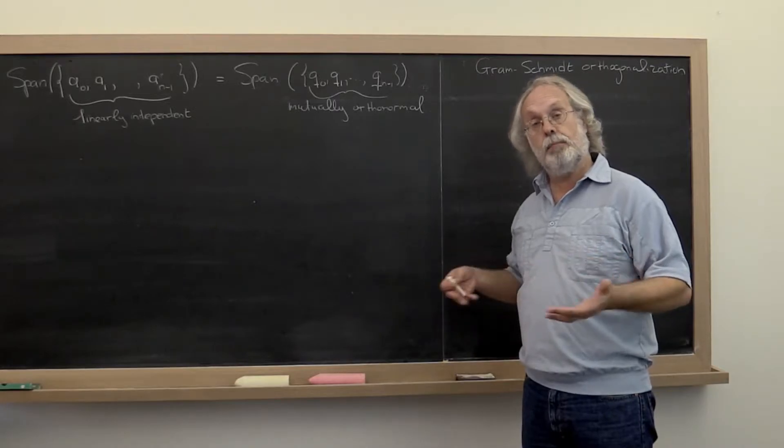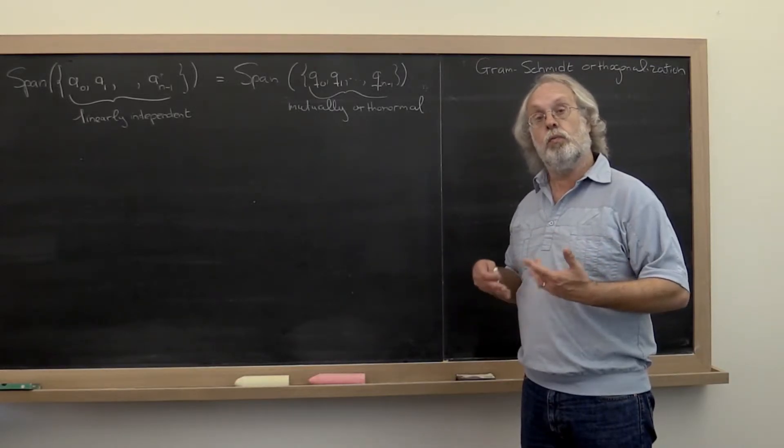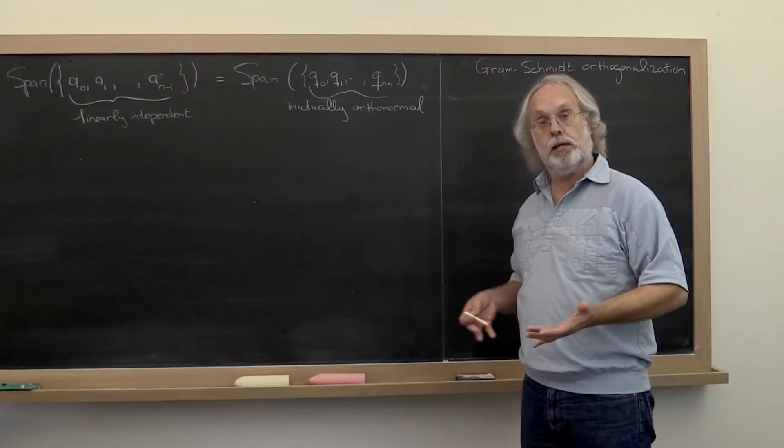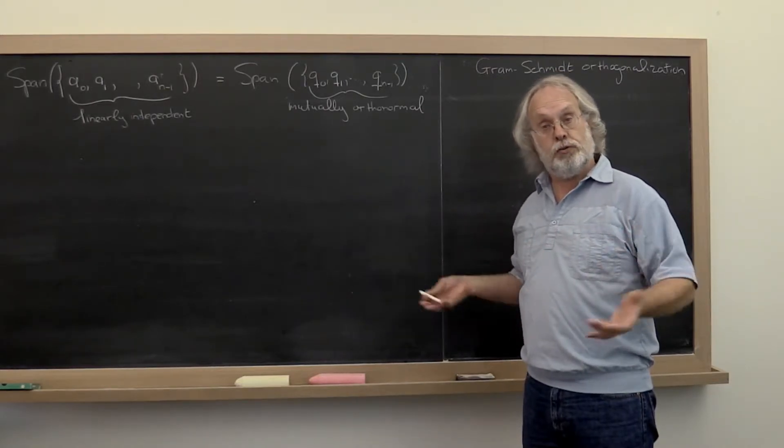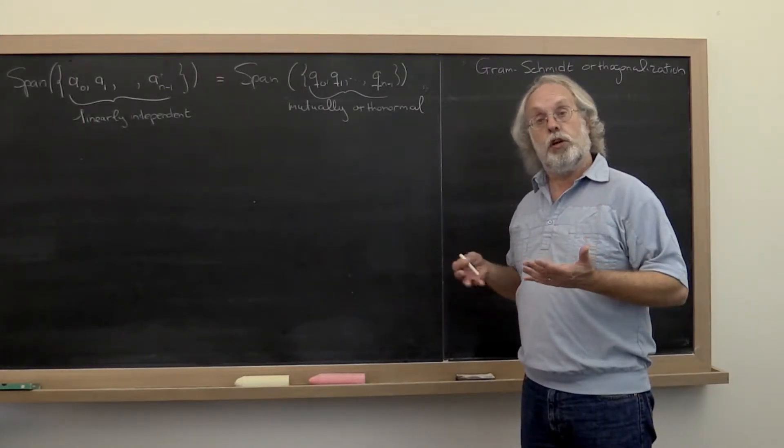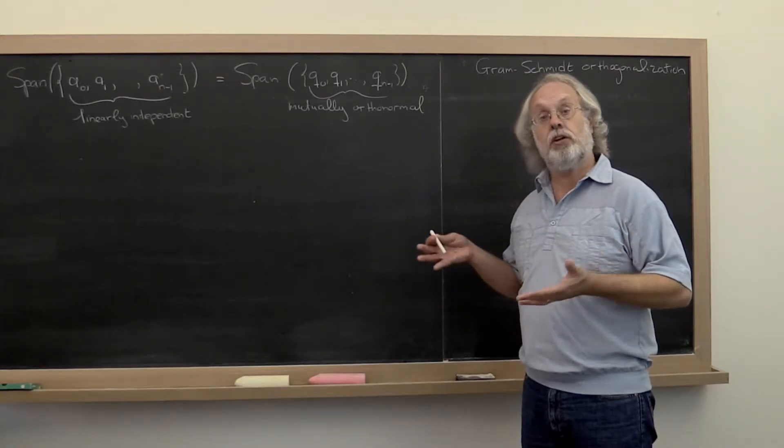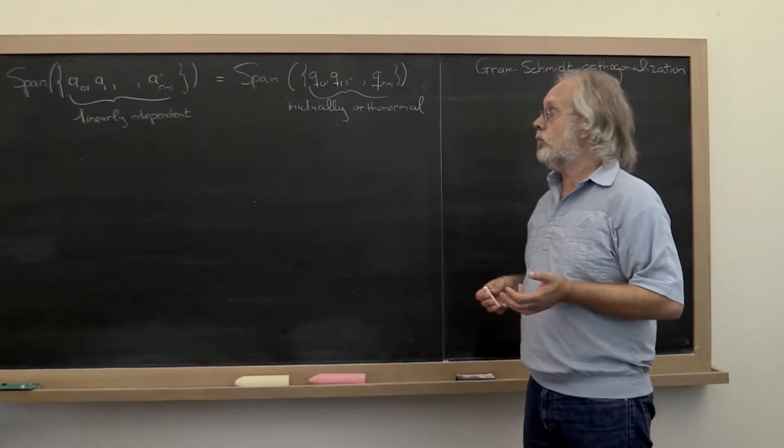The last example was in the launch, where when we formulated the problem nicely, the columns in the matrix that came up were mutually orthogonal. And we could have scaled those columns to make them orthonormal.